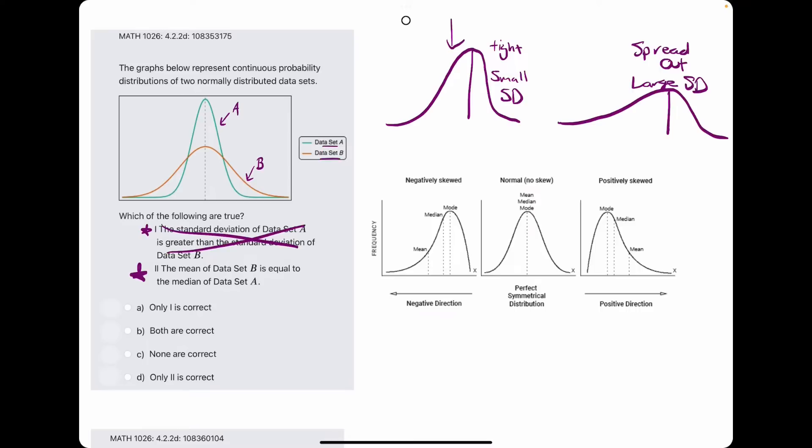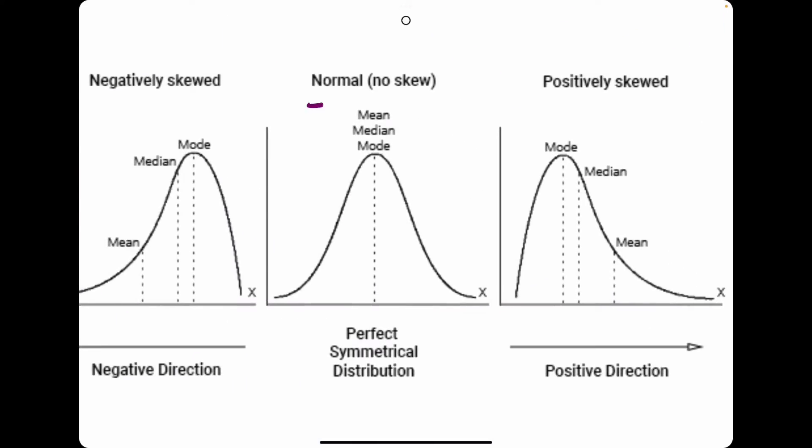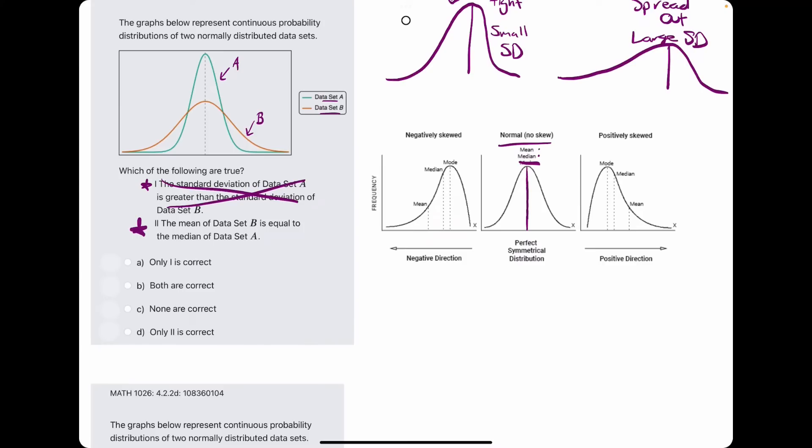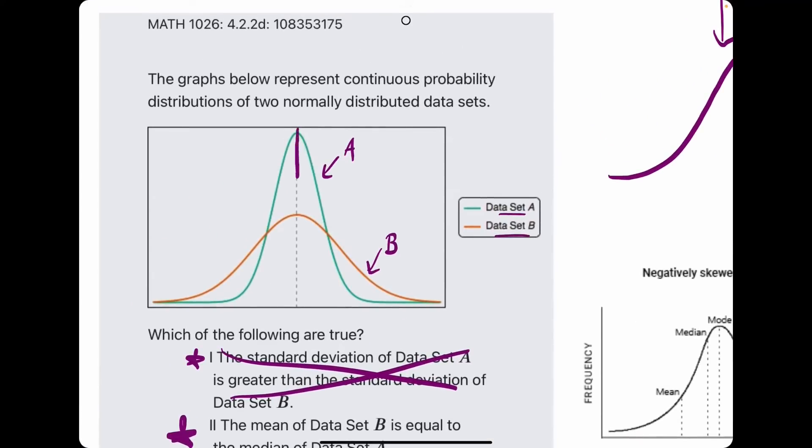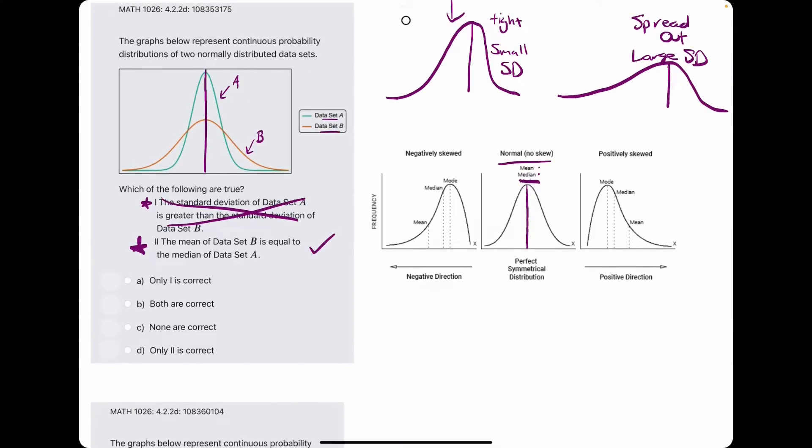Number two, the mean of data set B is equal to the median of data set A. Now this seems a little weird, but it definitely helps to think about normal curves and how the mean and median will always be the same smack dab in the middle. So the mean and median for both curves here are right in the middle, so this is a true statement.